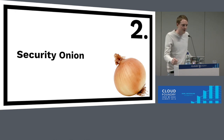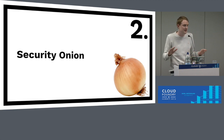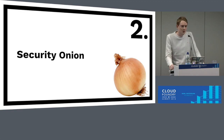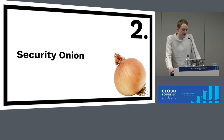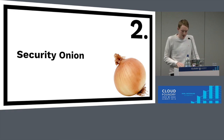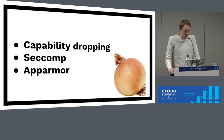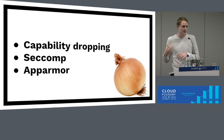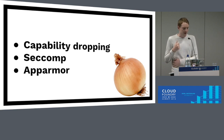At this point we might think we've got great isolation, cgroups, and dependencies sorted — we should be pretty good. But nothing's ever that easy. We need to think about what happens when somebody breaks out of that isolation. What can we do to protect ourselves? The answer is security onion — applying layers. There are some additional layers of security we can apply to containerized processes: capability dropping, seccomp, and AppArmor.